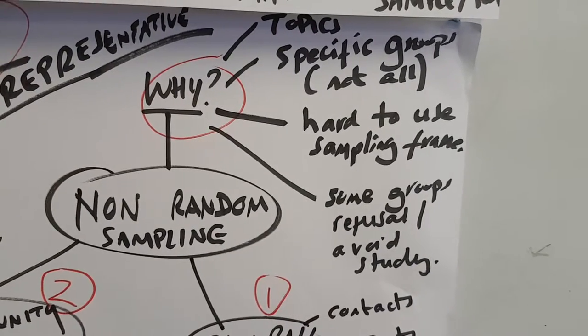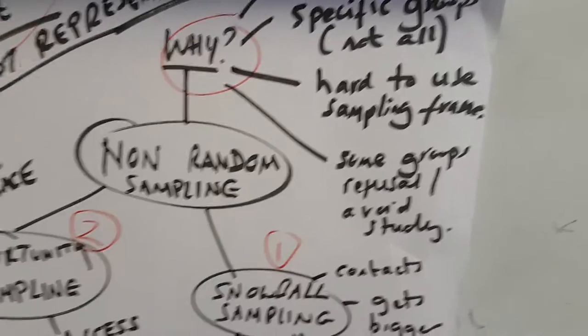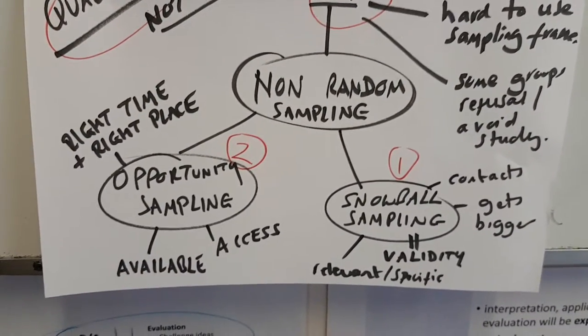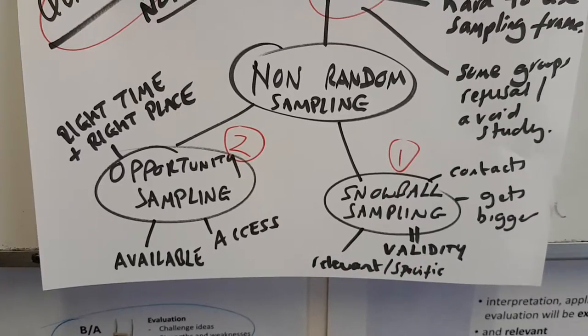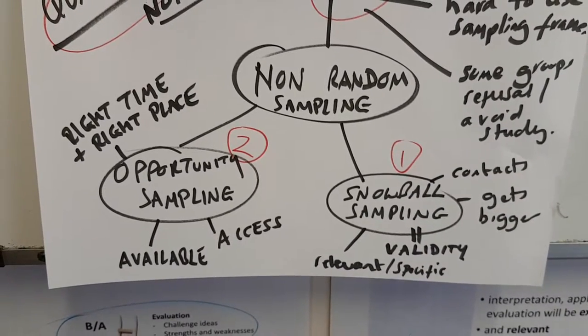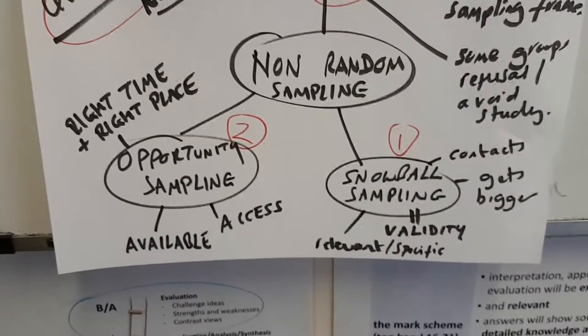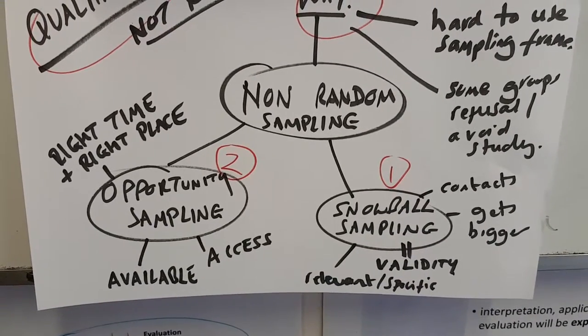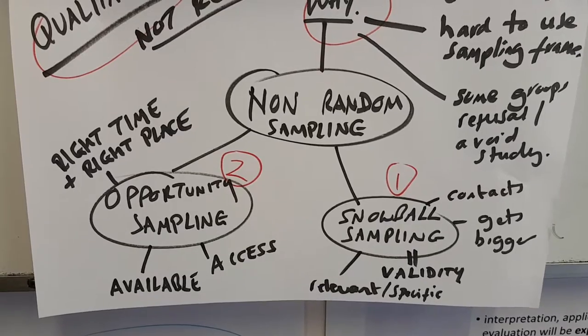The fact there's not sampling frames that are available and that some groups are actually quite hard to study. And in those occasions these kind of sampling methods are probably best to be used. It's felt to be high in validity, you've got issues there where you get around access, right time, right place, the contacts are there, and think about the kind of topics and the kind of subjects that you could consider there.